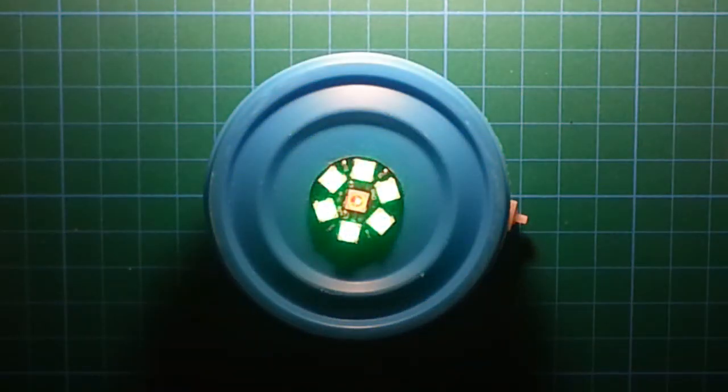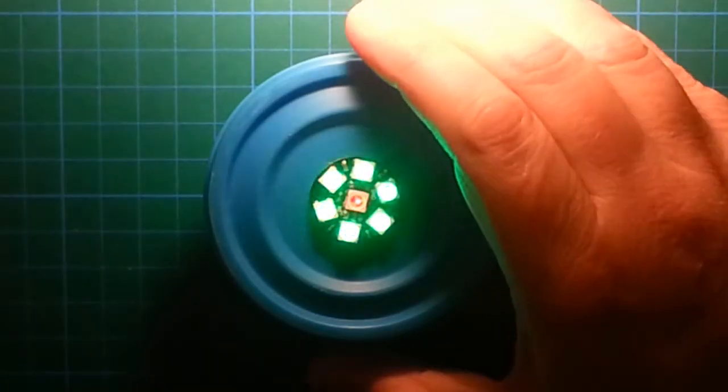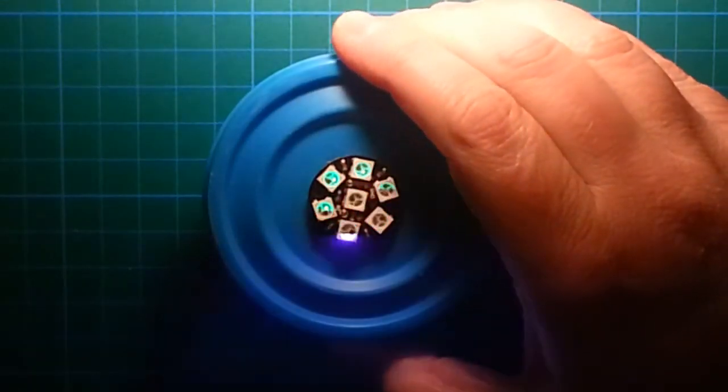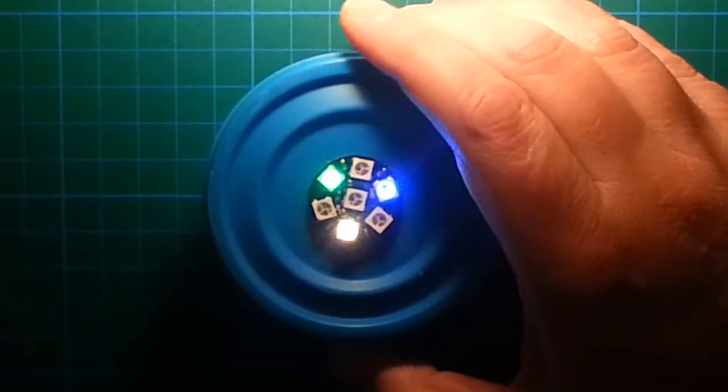In my sketch I make use of an interrupt that immediately triggers when the momentary button is pressed. It will make the changing of the pattern happen right away, as you can see when I press the button now and now.